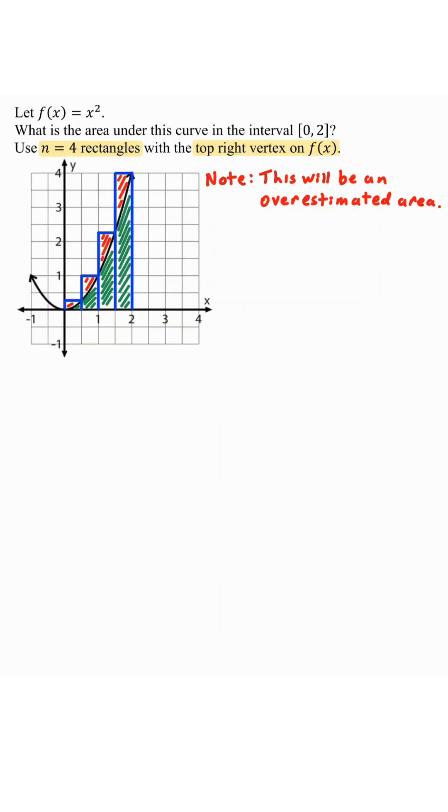All right. To find the area algebraically, the width of each rectangle on 0 to 2 with n equals 4 rectangles, meaning the width is equal to 2 minus 0 over 4, which is 1 half, or 0.5.